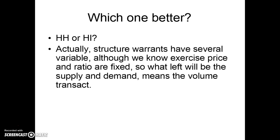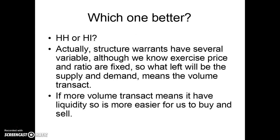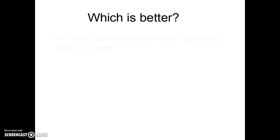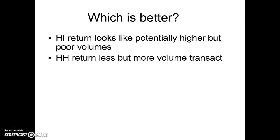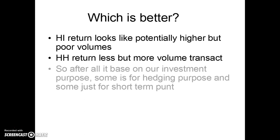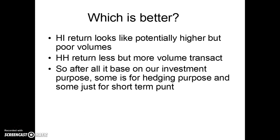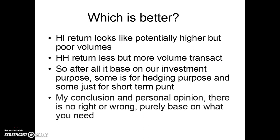Structural warrants have several variables. Although the exercise price and ratio are fixed, what matters is supply and demand — volume and transactions. More volume means more liquidity, making it easier to buy and sell. HI looks like it has potentially higher returns, but it lacks volume. HH has less return but more volume. It's purely based on your investment purposes — some for hedging, some for short-term trading. My personal conclusion: there is no right or wrong; it's purely based on what you need.